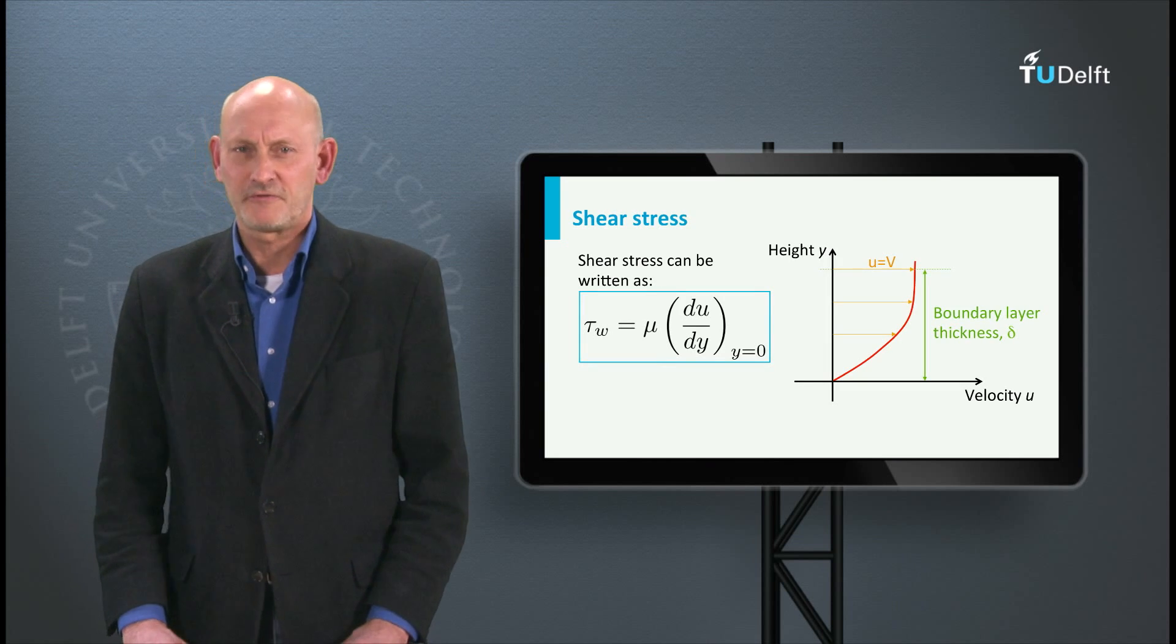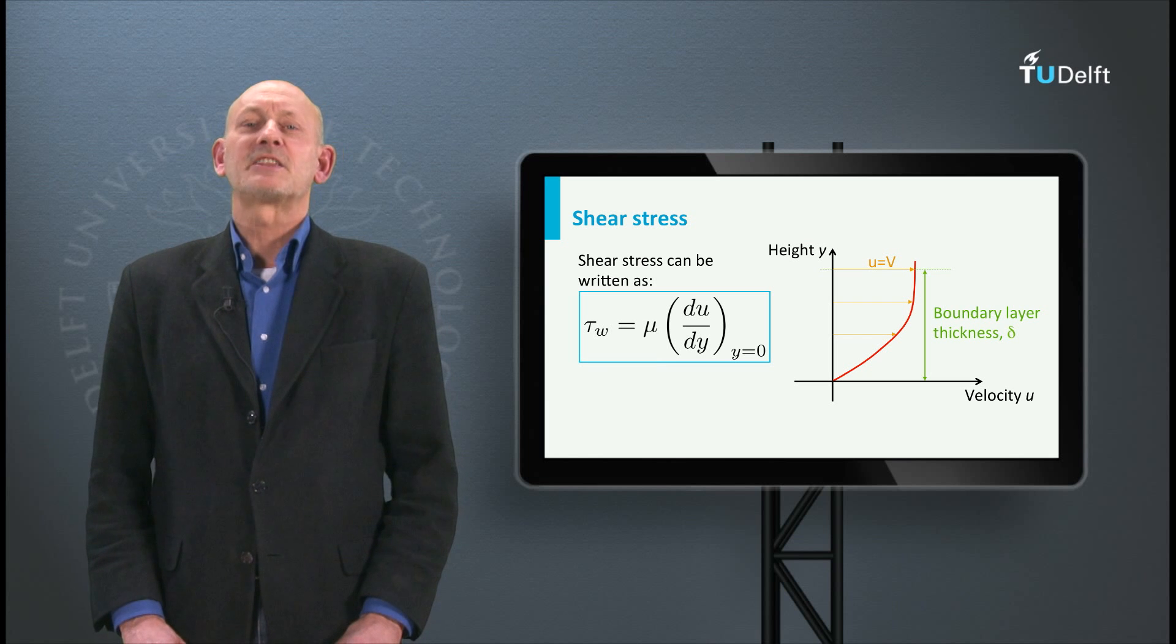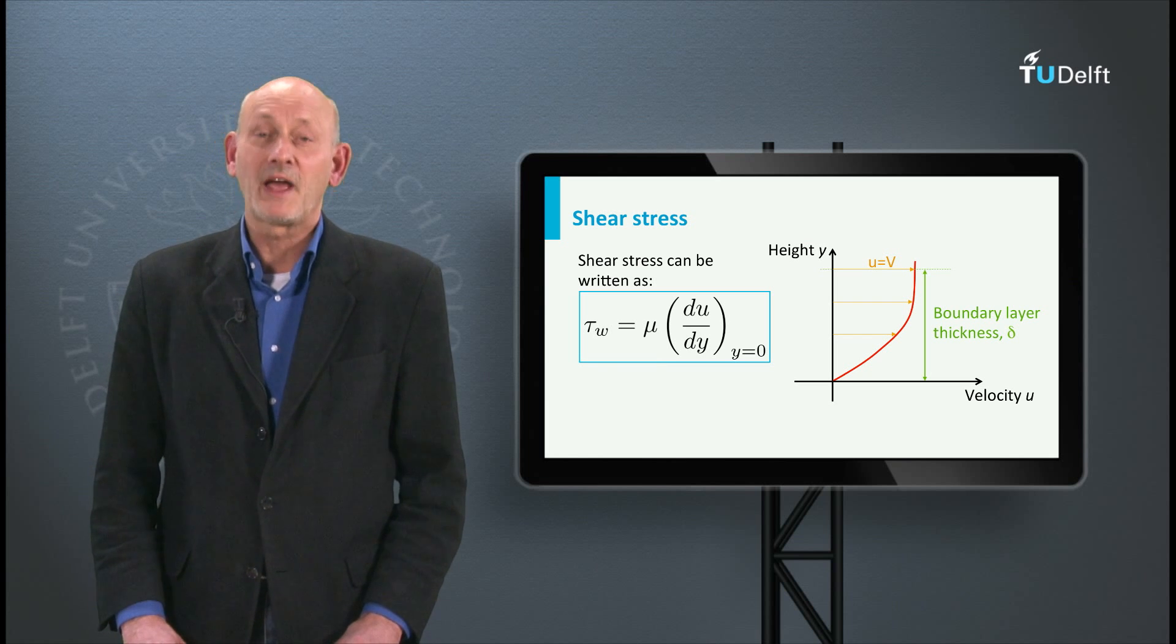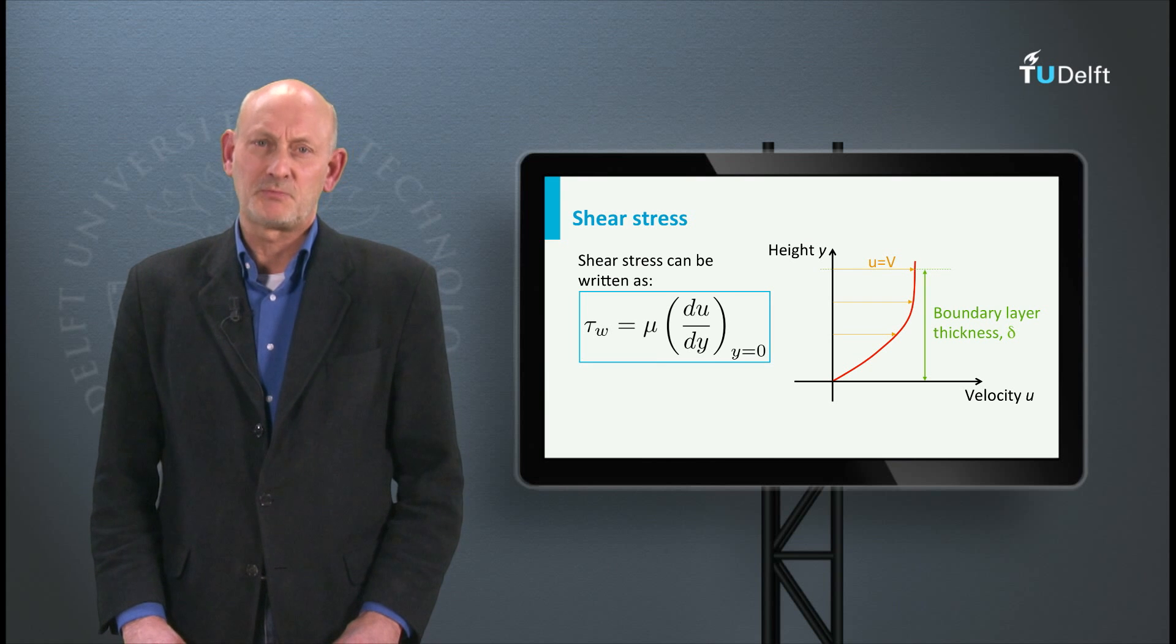So for the shear stress on the surface of a flat plate, we are looking at the velocity gradient near the wall at y equals zero. Here you see the boundary layer velocity profile, with the velocity u varying from zero at the surface to the undisturbed freestream velocity v infinity at the edge of the boundary layer.